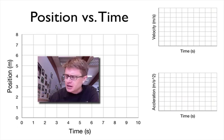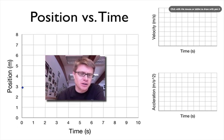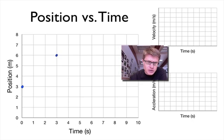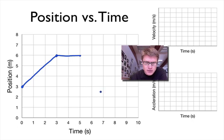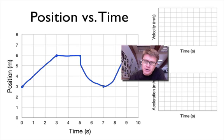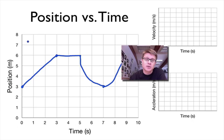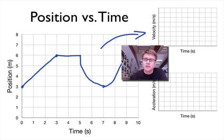This whole unit on position versus time graphs and graphing in general is designed so that when you are done, you should be able to take a position versus time graph and just by looking at it figure out exactly what the object is doing. Not only that, you should be able to go from a position versus time graph to a velocity versus time graph, and then from a velocity versus time graph to an acceleration versus time graph.